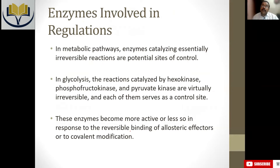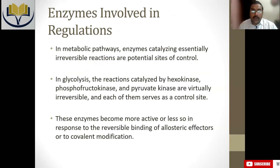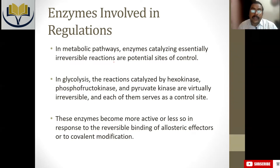In any metabolic pathway, major control points can be the irreversibly functioning enzymes — those enzymes which function irreversibly can be the control points. In glycolysis, we have three different enzymes which can be regulated: hexokinase, phosphofructokinase, and pyruvate kinase. These three enzymes have irreversible mechanisms, so we can control the glycolytic pathway by controlling these three enzymes.